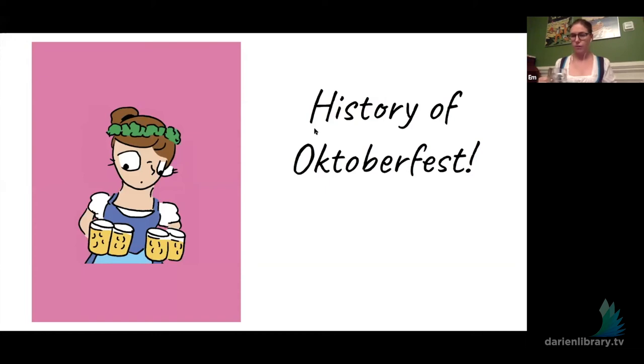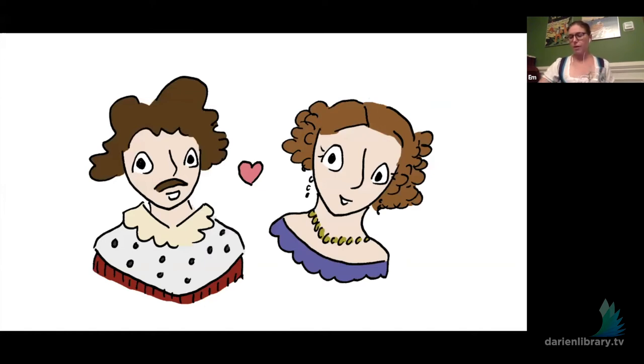So we're going to talk about the history of Oktoberfest. And the best part about Oktoberfest is it starts, what day is it today? It's the 13th or 14th of October. So it's October 12th, 1810. And these two little birds are going to get married. They actually don't really like each other. He cheats on her a bunch. It's not a great match, but it's fine. It's royalty. It's the 19th century.